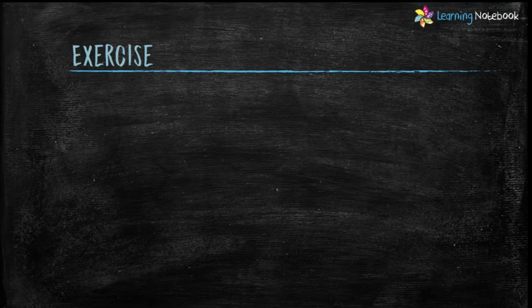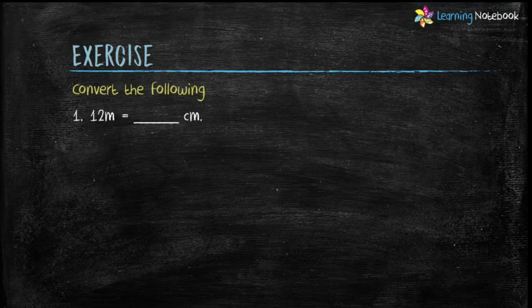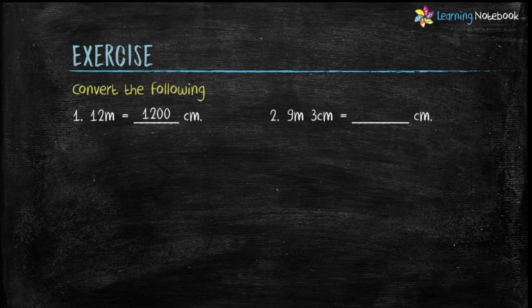Now let's do an exercise to understand conversion of length units. First question: 12 meters equals to how many centimeters? We know 1 meter equals to 100 centimeters, so to convert 12 meters into centimeters we multiply by 100, and we get 12 into 100 equals to 1200 centimeters.